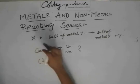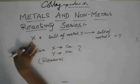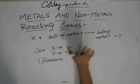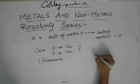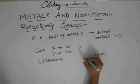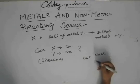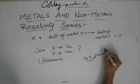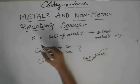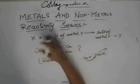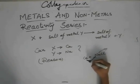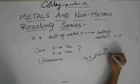So x is calcium and y is a salt of sodium. Let us consider it as sodium chloride. Can calcium knock out sodium? That means in this reaction, x is knocking out y and making a salt of x and giving y — so can calcium knock out sodium from its salt?